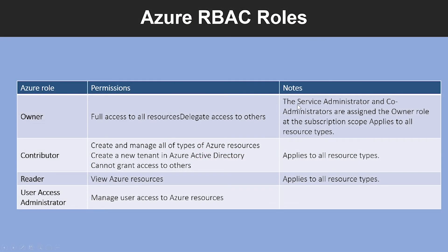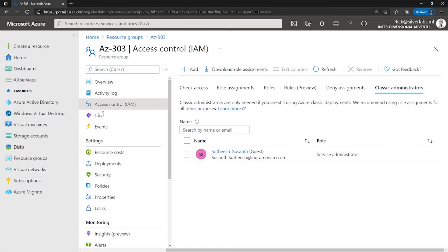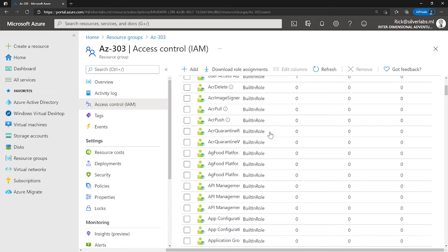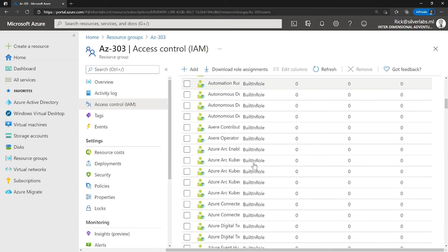Next, let's look into Azure roles. Azure RBAC includes over 70 built-in roles, and there are four fundamental Azure roles. The first three apply to all resource types, which are owner, contributor, and reader. On the same Access Control IAM page, click on roles — this is where you will see the list of built-in and custom roles.